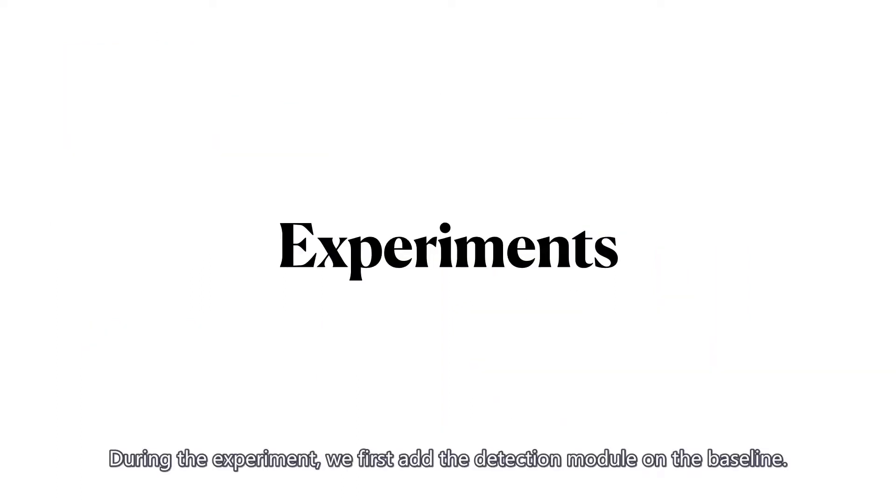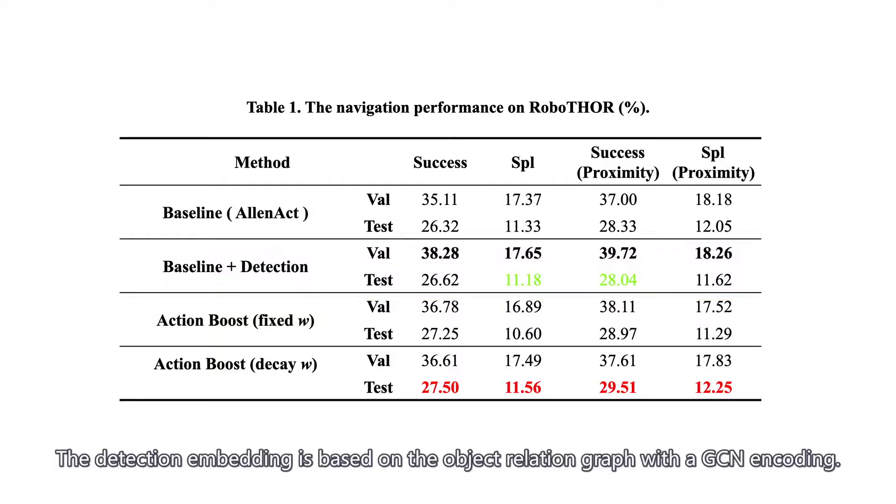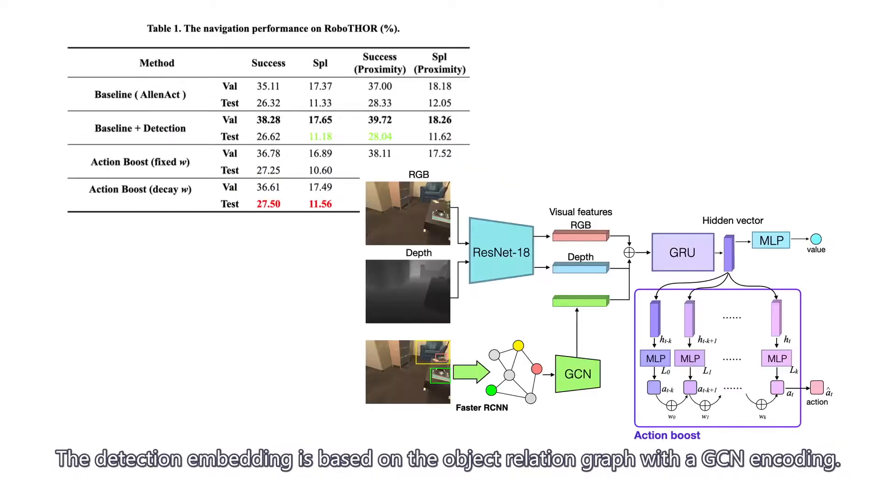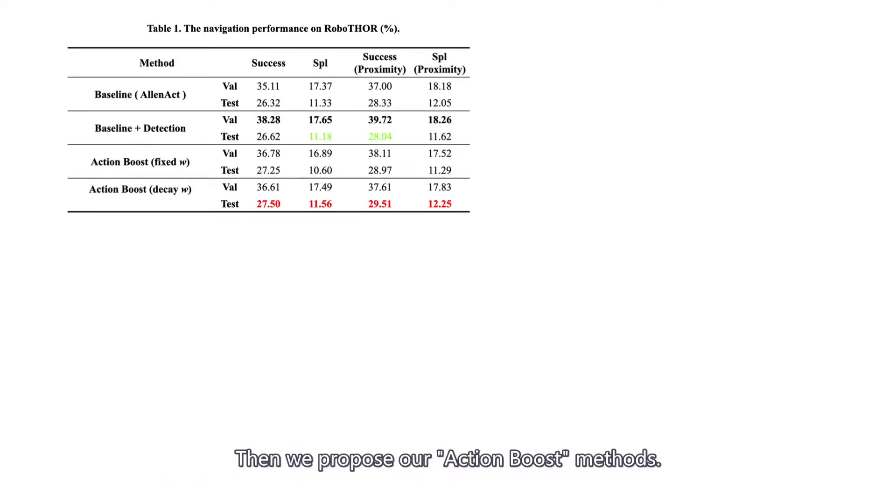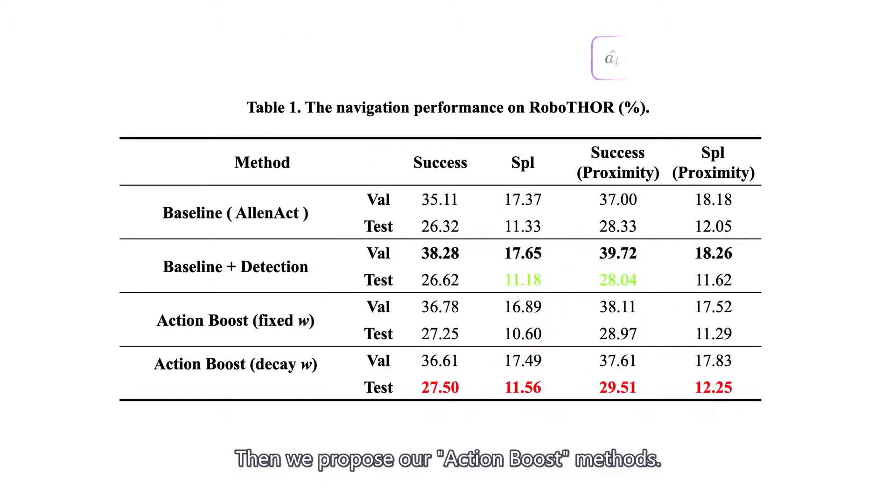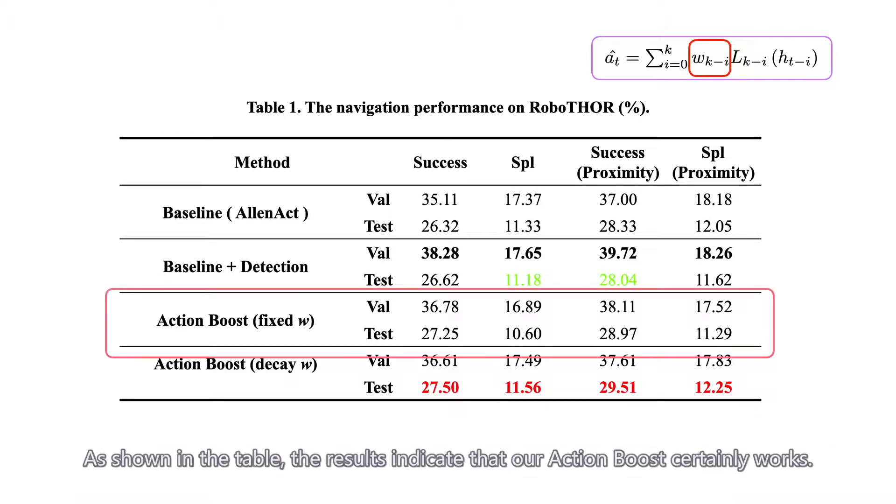During the experiment, we first add the detection module on the baseline. The detection embedding is based on the object relation graph with adjacency encoding. However, we find it of little help in the navigation performance. Then, we propose our action booster methods. We respectively train the module with the fixed action weight W or the decaying weight. As shown in the table, the results indicate that our action boost certainly works.